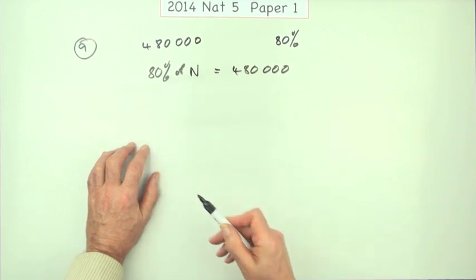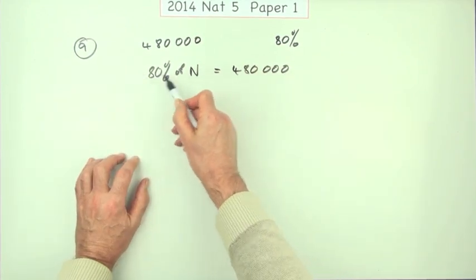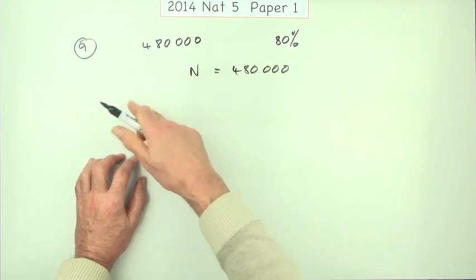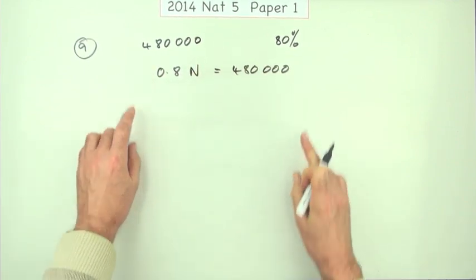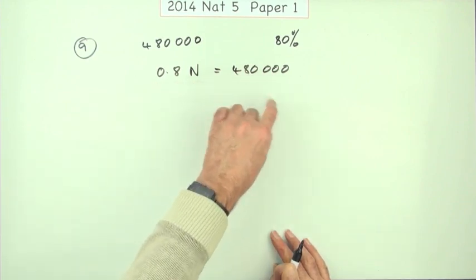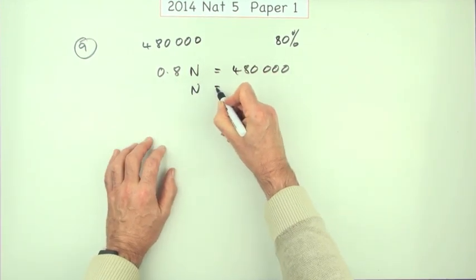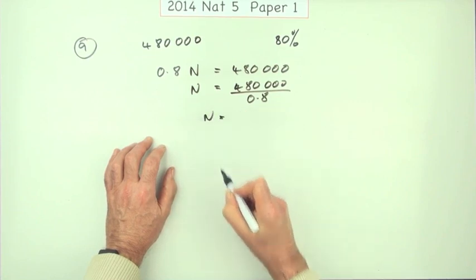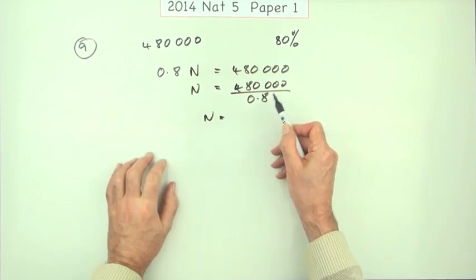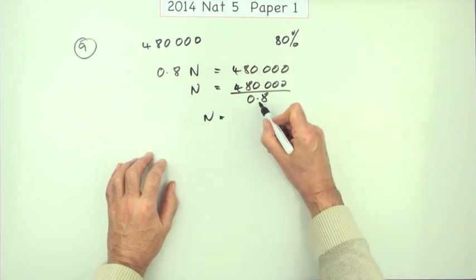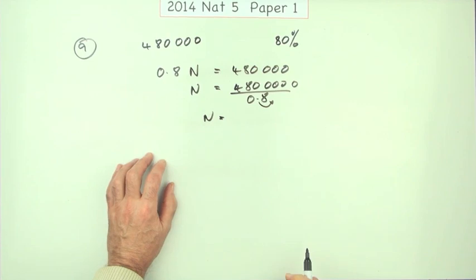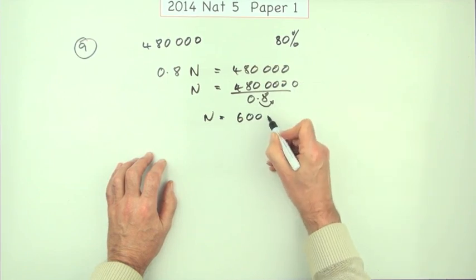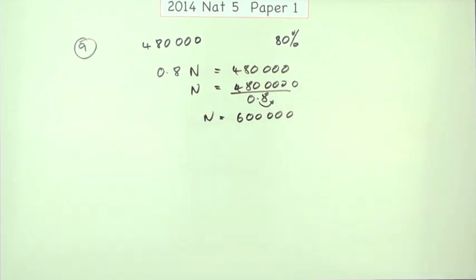The other method treats it as a decimal factor. Instead of writing 80% of n, you write 0.8 of n equals 480,000. Straightforwardly, n must be 480,000 divided by 0.8. To divide by a decimal, multiply top and bottom by 10, giving 4,800,000 divided by 8. Since 8 into 48 goes 6, the answer is 600,000.